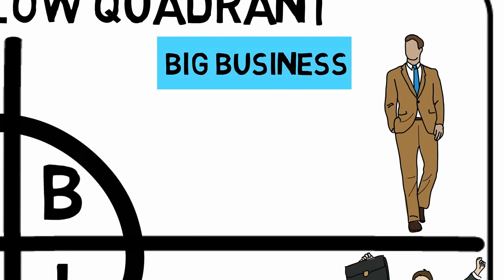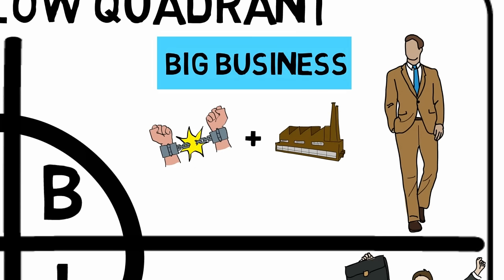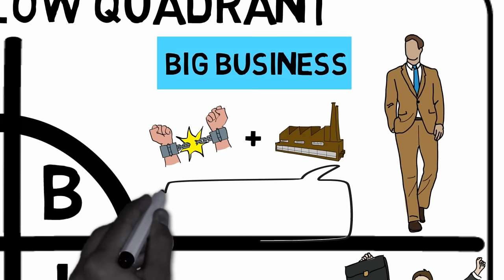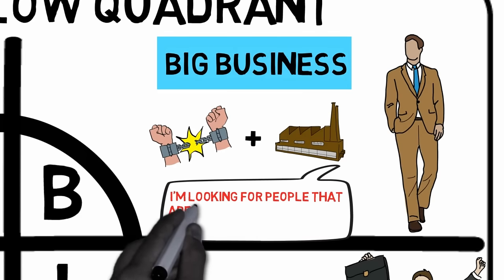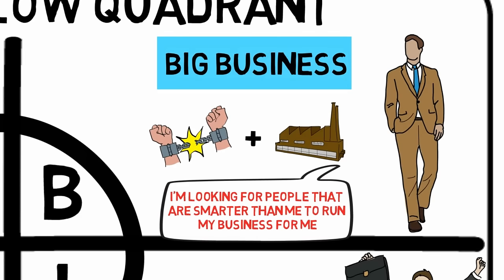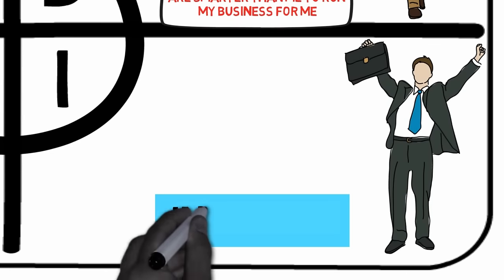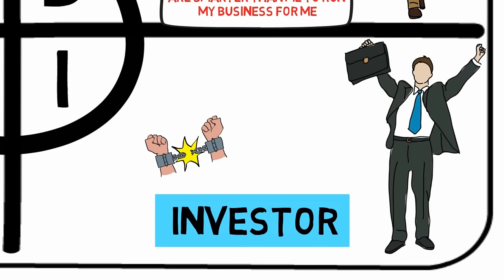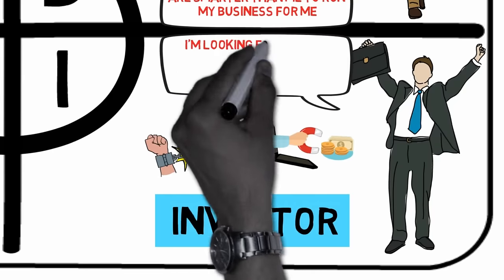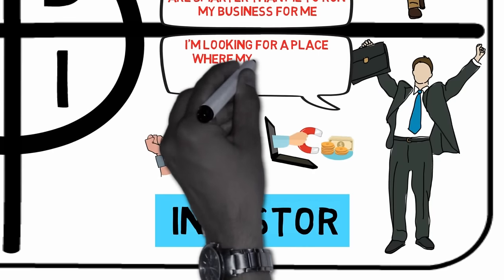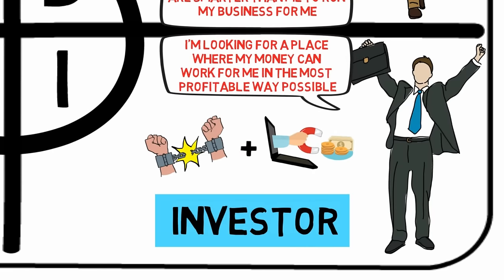The big business owner strives for freedom. He achieves financial success by creating a profitable business system. You might hear him say something like: I'm looking for people that are smarter than me to run my business for me. The investor also strives for freedom, but does this through allocating money to where it has the highest expected return. You might hear him say: I'm looking for a place where my money can work for me in the most profitable way possible.